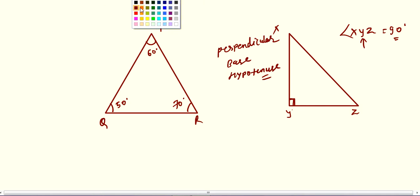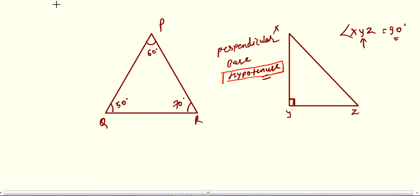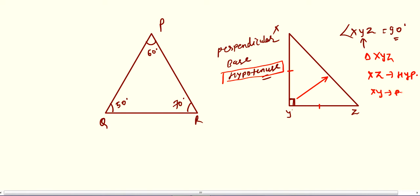The bigger side is the hypotenuse. To identify which side is the hypotenuse: angle Y is 90 degrees, and the side opposite to this angle is XZ. So in triangle XYZ, XZ is the hypotenuse. The remaining two sides, XY and YZ, can be taken as perpendicular and base respectively.